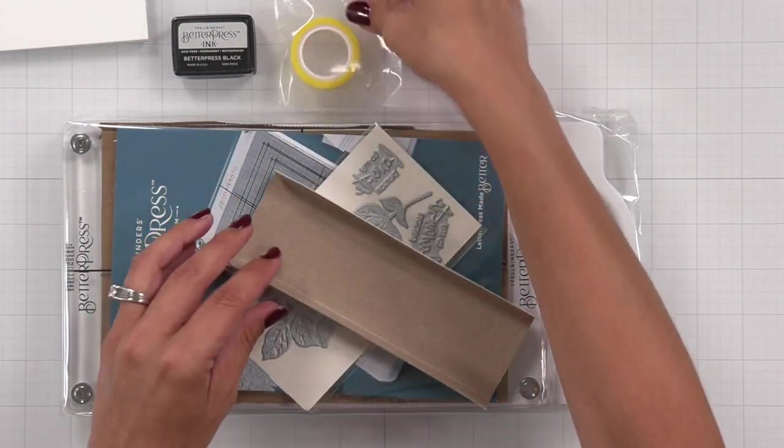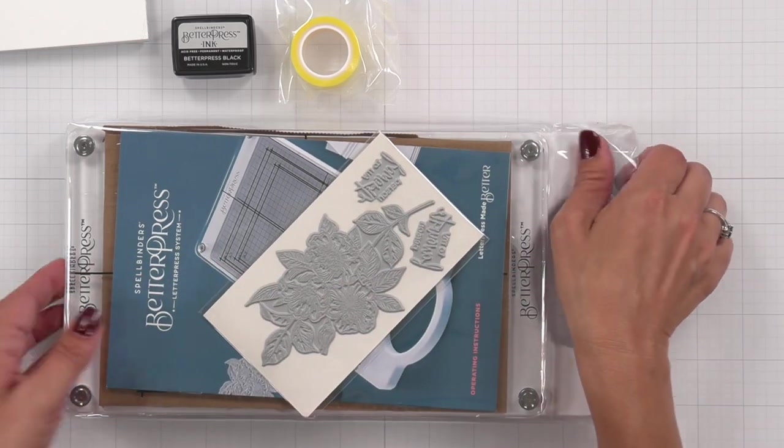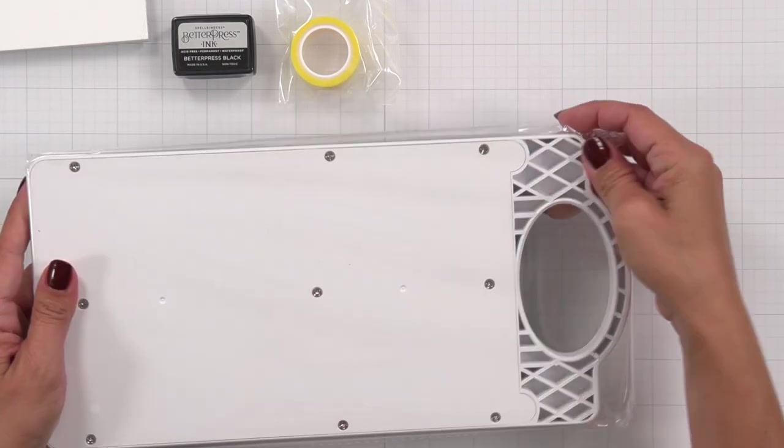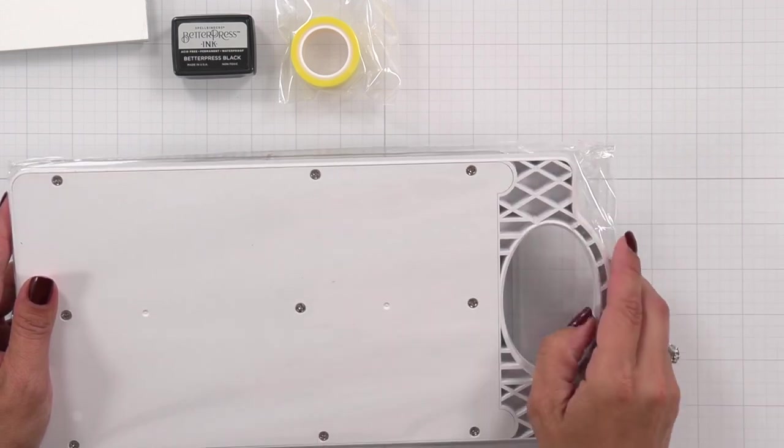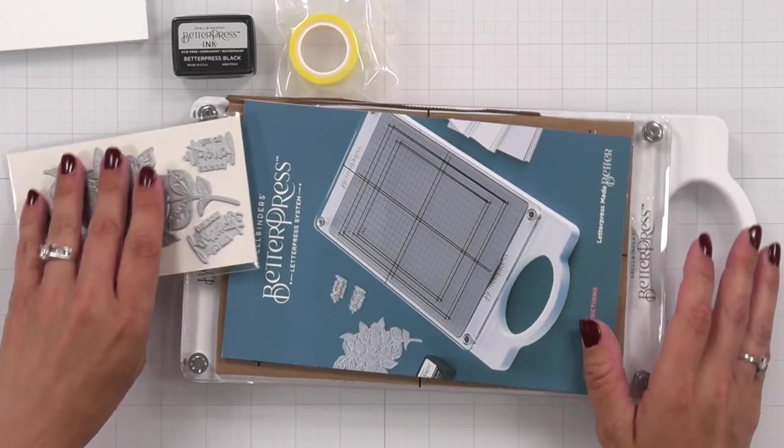There is an ink pad, a mini black ink pad, some best ever craft tape, and then you have your platform. Now they have very specific words for these. I probably will screw it up throughout the video but I will try my best to have the proper terminology.